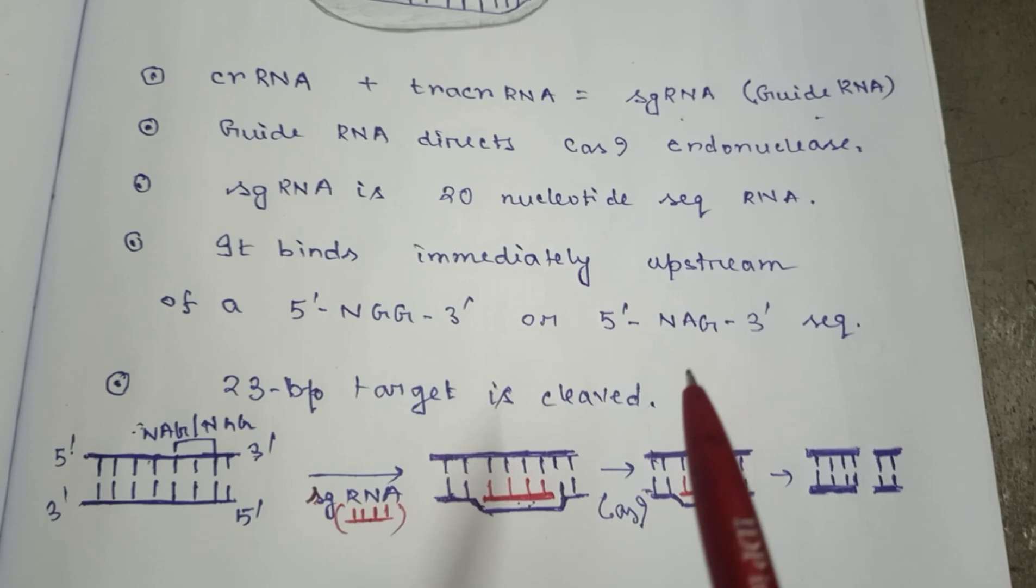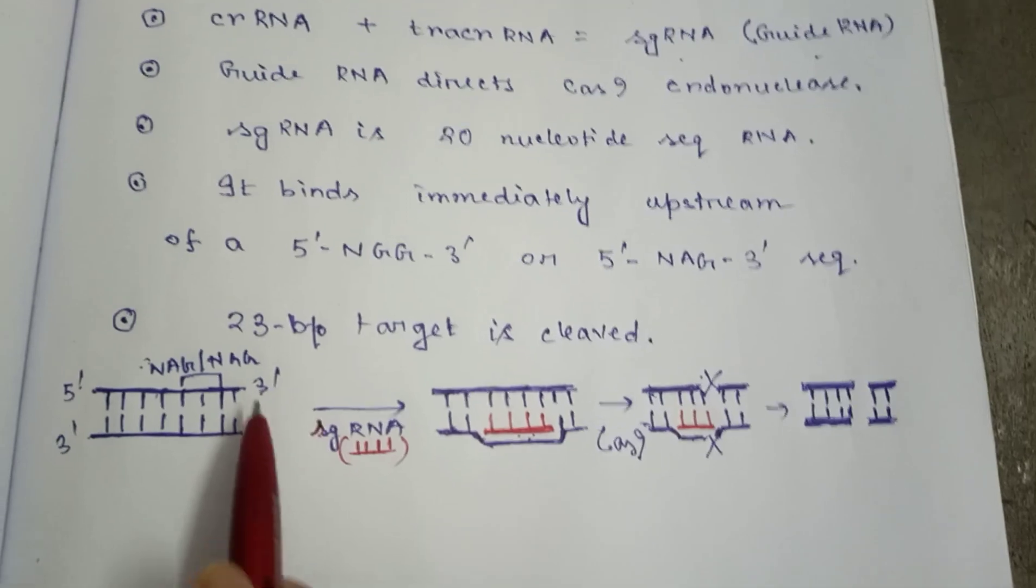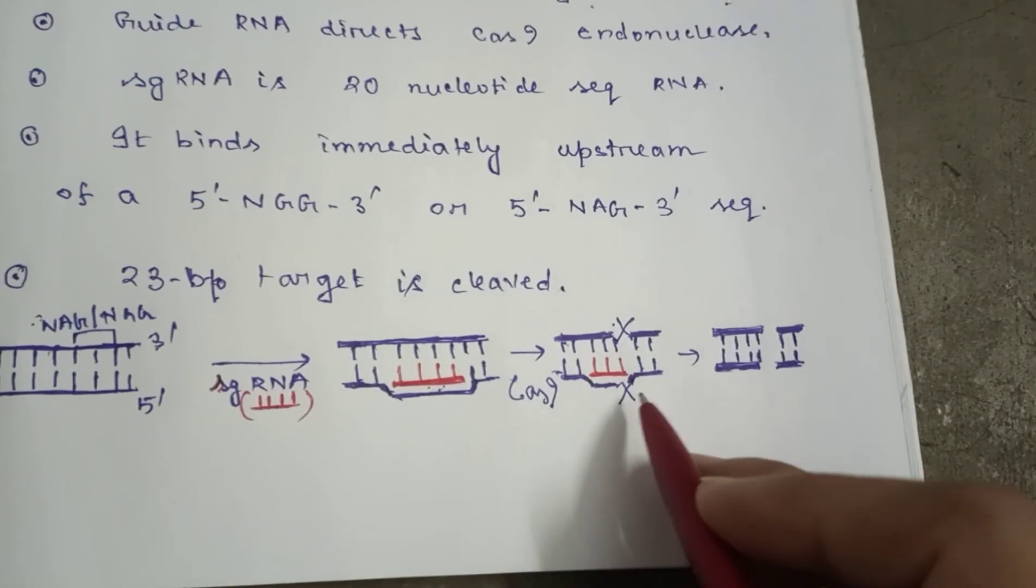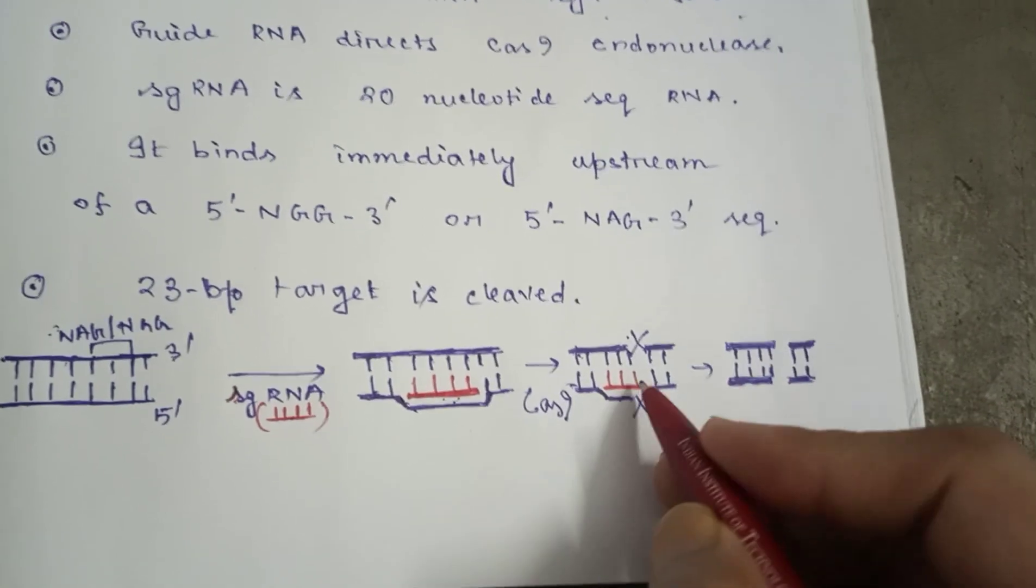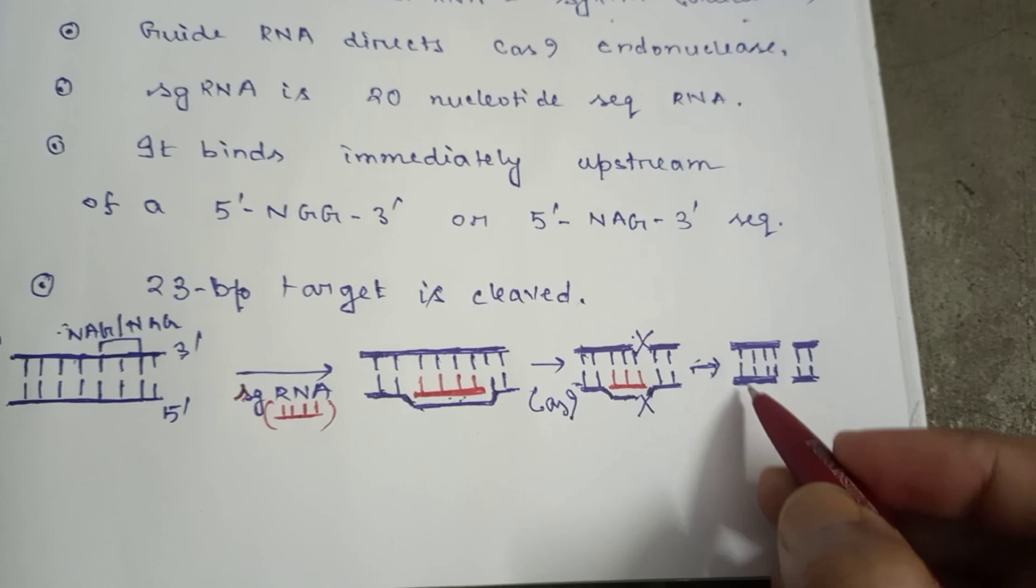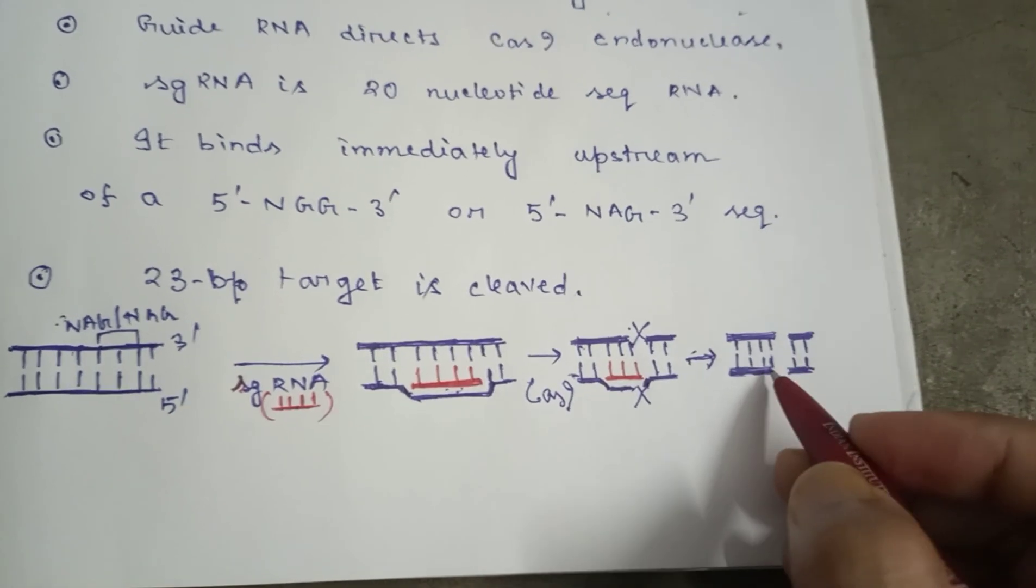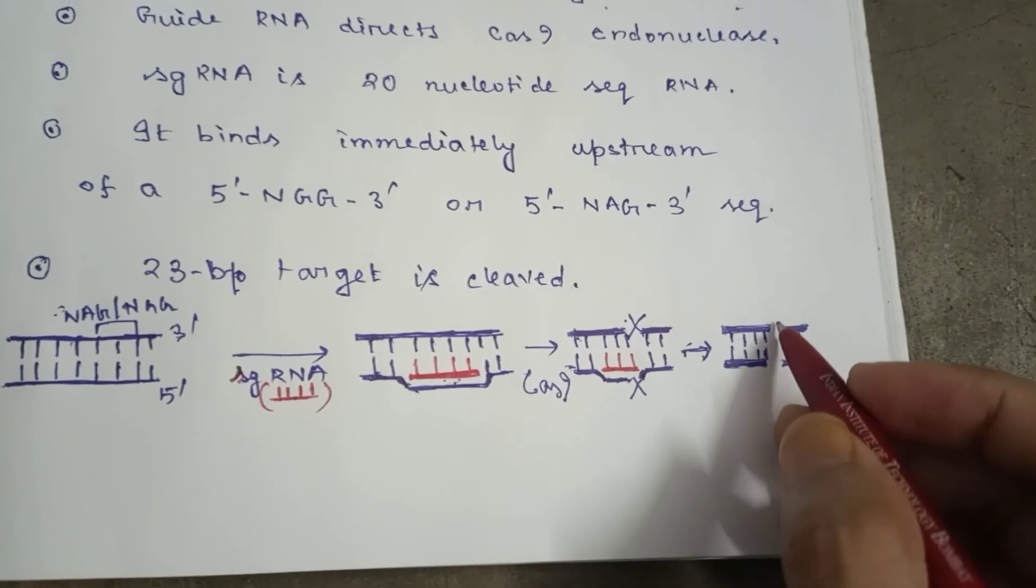Guide RNA will see where the 5' NGG or NAG part is. What will happen here after the dissociation? After the dissociation of the guide RNA, the guide RNA will be dissociated and you can have the edited DNA.